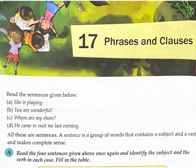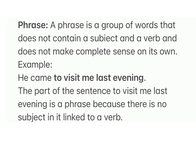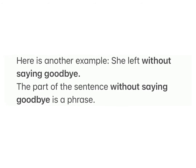Lesson 17: Phrases and Clauses. A phrase is a group of words that does not contain a subject and a verb, and does not make complete sense on its own. Example: 'He came to visit me last evening.' The part 'to visit me last evening' is a phrase because there is no subject in it linked to a verb. Another example: 'She left without saying goodbye' — 'without saying goodbye' is a phrase.